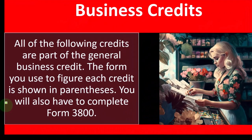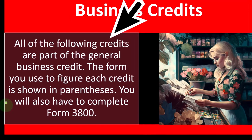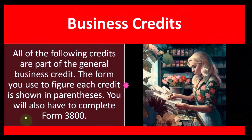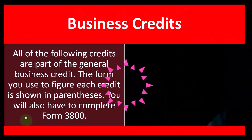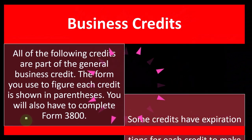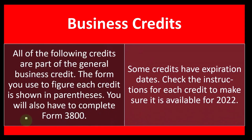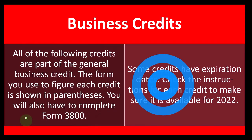All the following credits are part of the general business credits. The form you use to figure each credit is shown in parentheses, and you will also have to complete Form 3800. Some credits have expiration dates, so check the instructions for each credit to make sure.